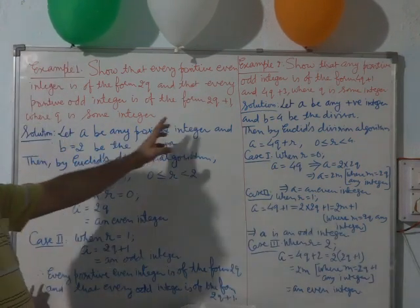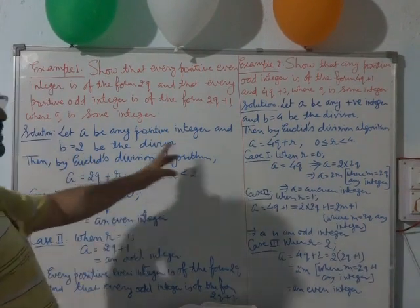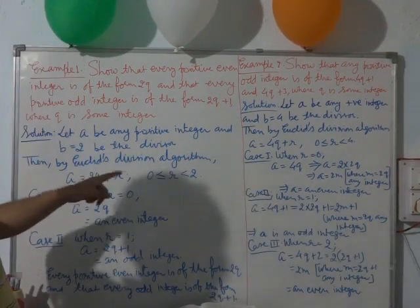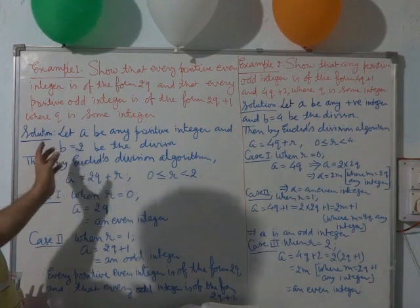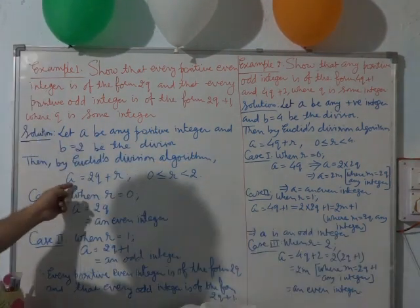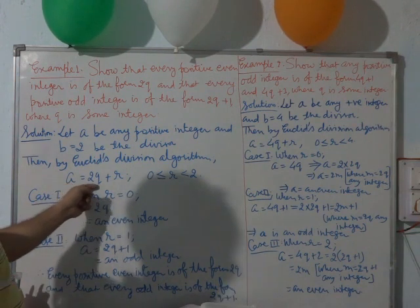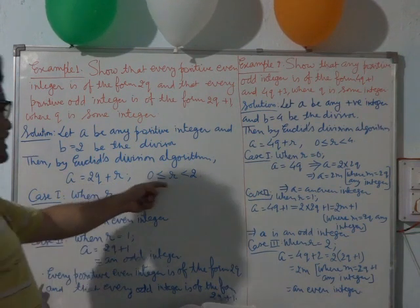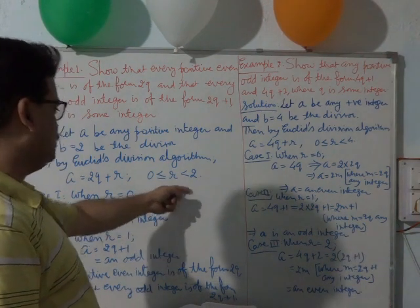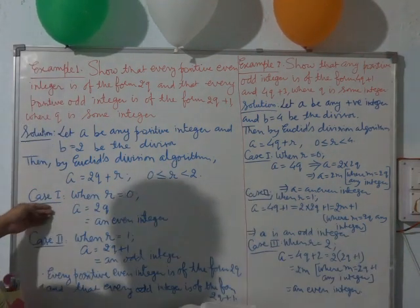Let A be any positive integer and B equal to 2 be the divisor. Recall Euclid's division algorithm: A is equal to Bq plus R. In the same format we can write A is equal to 2q plus R, where R is greater than or equal to 0 but less than 2. R cannot equal the divisor. Now we have two cases.